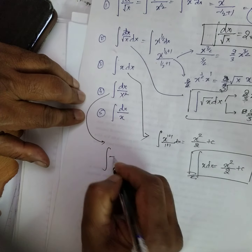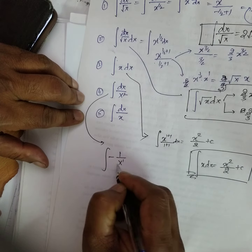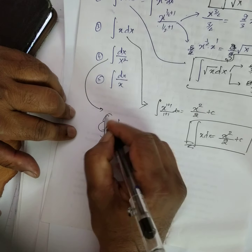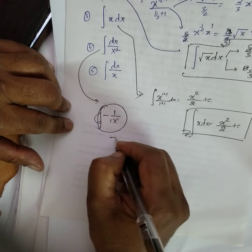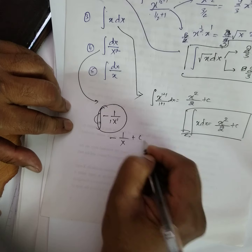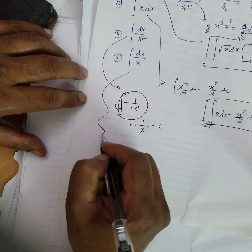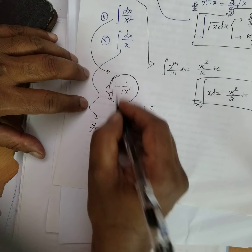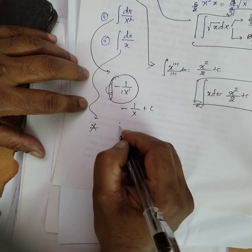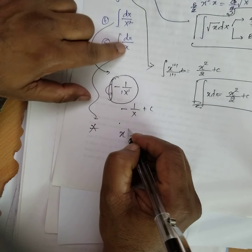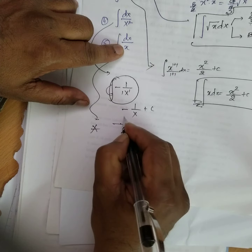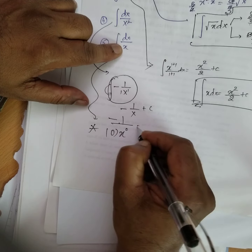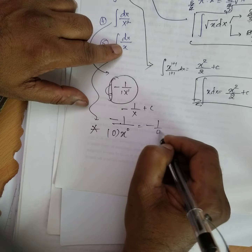Whenever it is in a denominator, change the sign, decrease the power, multiply by the decreased power. But for dx by x — that is x to the power of minus 1 — decreasing the power gives 0, and minus 1 divided by 0 is not defined, infinity. So the power rule fails here.